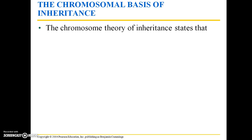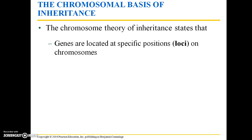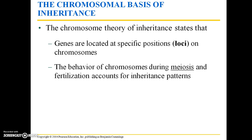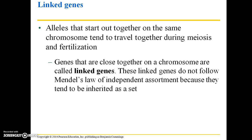The chromosomal basis of inheritance states that genes are located at specific positions or loci on chromosomes. Linked genes are alleles that start out together on the same chromosome and tend to travel together during meiosis and fertilization. Genes that are close together on a chromosome are called linked genes, and these do not follow Mendel's law of independent assortment because they tend to be inherited as a set. However, they tend to be inherited as a set — that doesn't mean they absolutely have to be. In biology, almost everything has an exception to the rule.